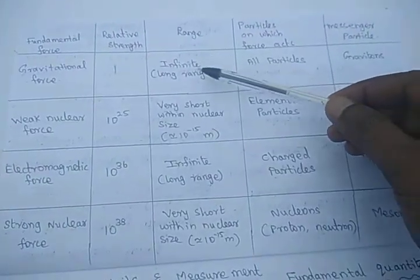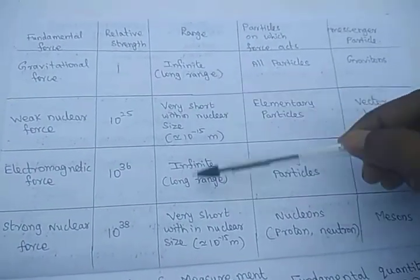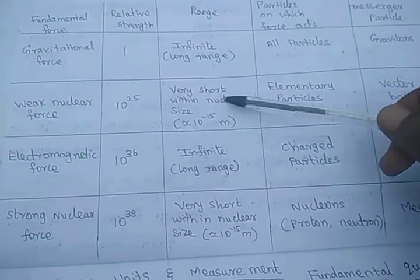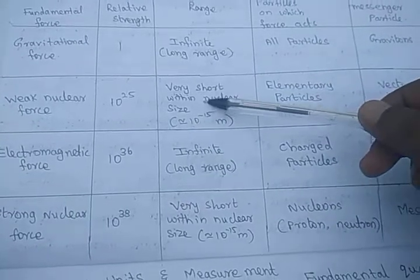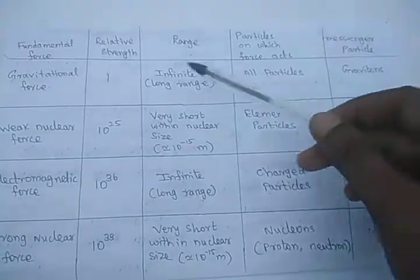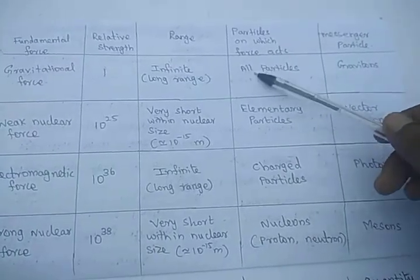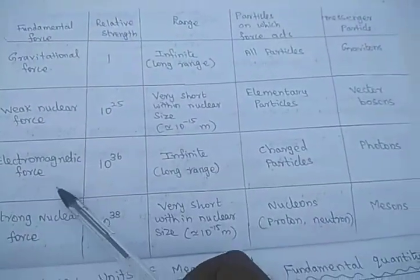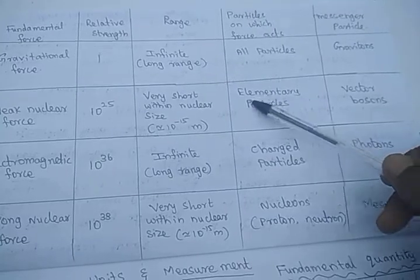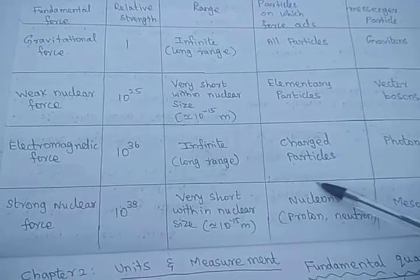In terms of range: gravitational force and electromagnetic force have a long range — they act over longer distances between particles. Weak nuclear force and strong nuclear force occur only inside the nucleus. Gravitational force acts on all particles — macroscopic as well as microscopic, though it is very weak at microscopic scale. Electromagnetic force occurs only in charged particles. Weak nuclear force occurs in elementary particles, and strong nuclear force occurs in nucleons.